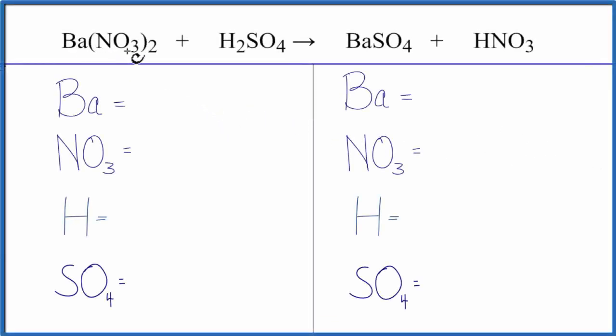To balance this equation, Ba(NO3)2 plus H2SO4, let's count the atoms up on each side of the equation.